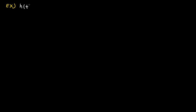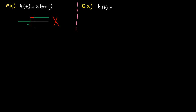Example: H(t) = u(t+1), which is a unit step shifted 1 unit to the left. As you can see, H(t) is not zero for t < 0, so the system is not causal. Second example: H(t) = e^(−t) u(t). The unit step is 0 for t < 0 and 1 after that, giving e^(−t) multiplied by 1. H(t) is 0 for t < 0, so the system is causal.